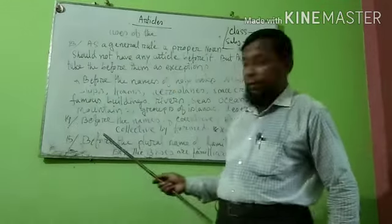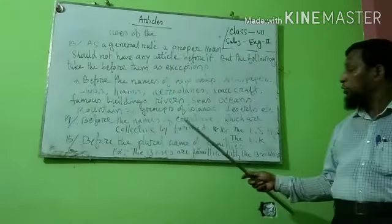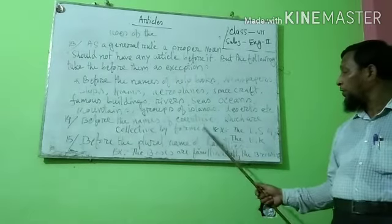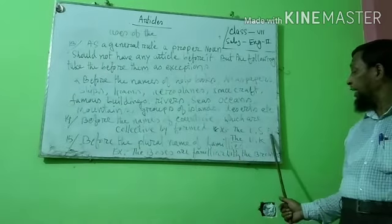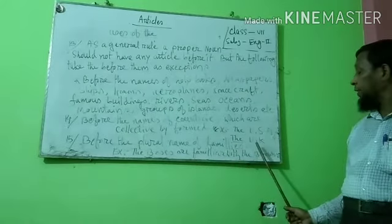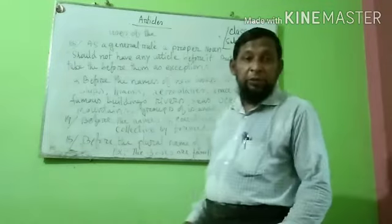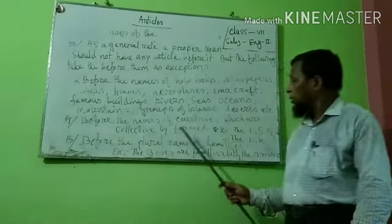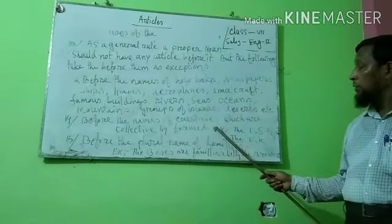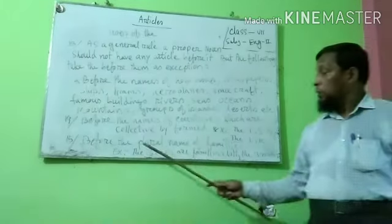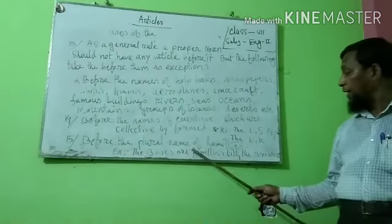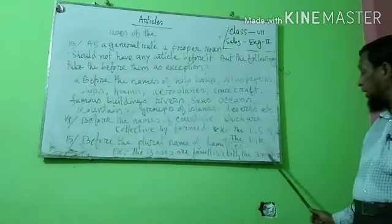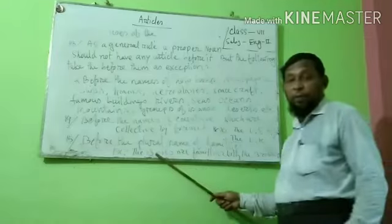Number fourteen: before the names of countries which are formed by a collection of states or unions. Example: The USA, The UK — United States of America. Number fifteen: before the plural name of families. Example: The Bosses are familiar with the Browns. This is the definite article.